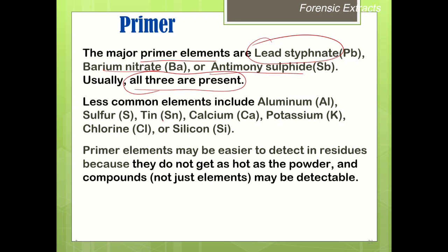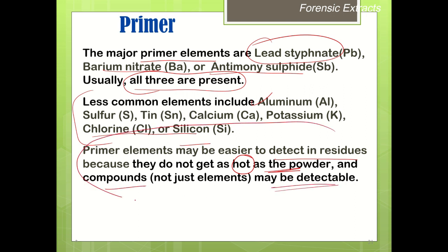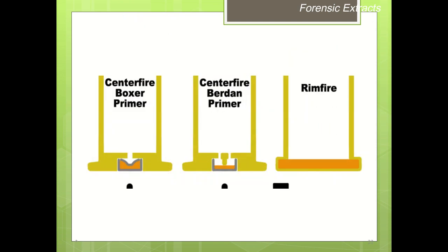The primer is made up of lead styphnate, barium nitrate, and antimony sulfide. Less common elements include aluminium, sulfur, tin, calcium, potassium, chlorine, and silicone. Primer elements may be easier to detect in residue because they do not get as hot as the powder, and these primer residues — mostly metals — can be detected in gunshot residue. The primer can be center-fired or rim-fired.